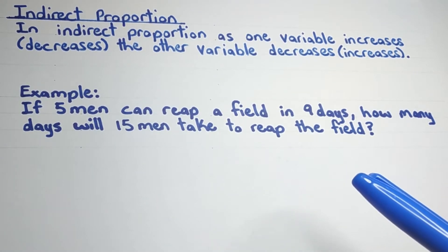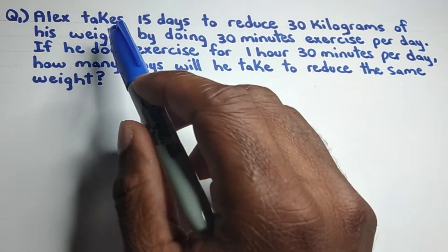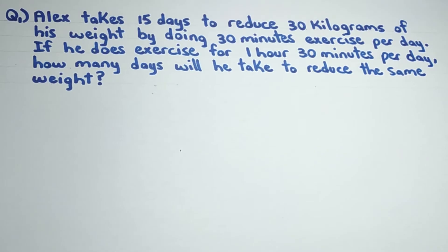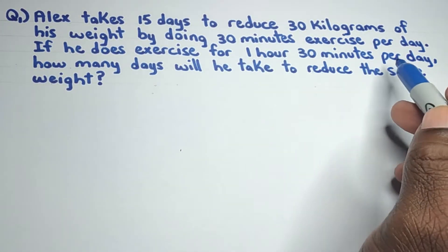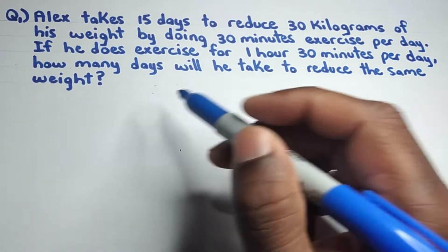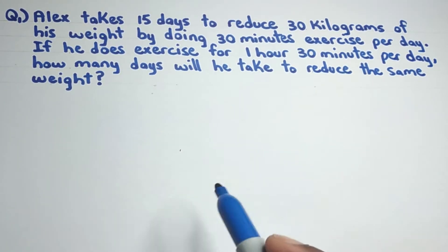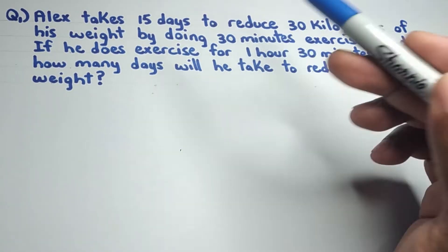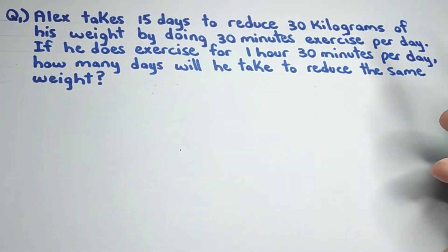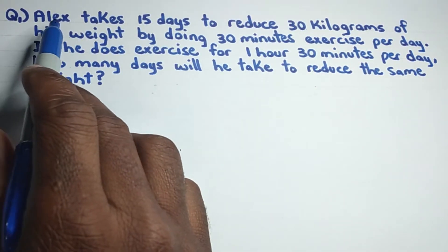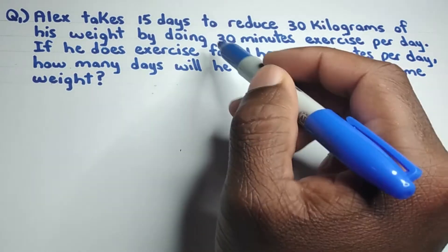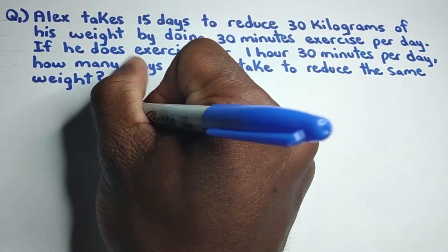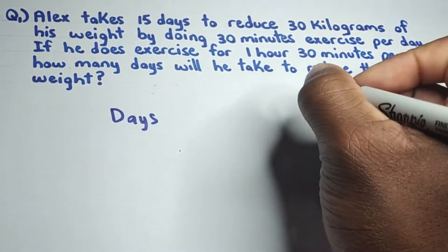Now let's look at Question 1. Alex takes 15 days to reduce 30 kilograms of his weight by doing 30 minutes of exercise per day. If he does exercise for one and a half hours per day, how many days will he take to reduce the same weight? First, we identify the two variables. The weight — 30 kg — stays constant, so we focus on comparing days with minutes of exercise.